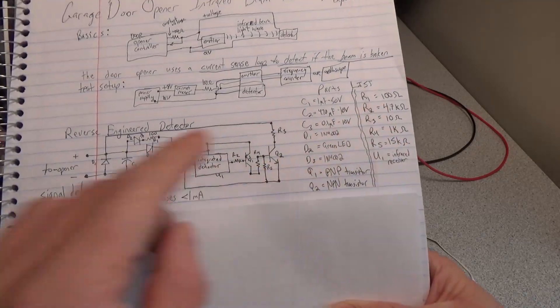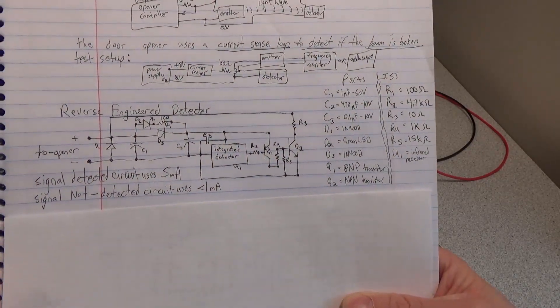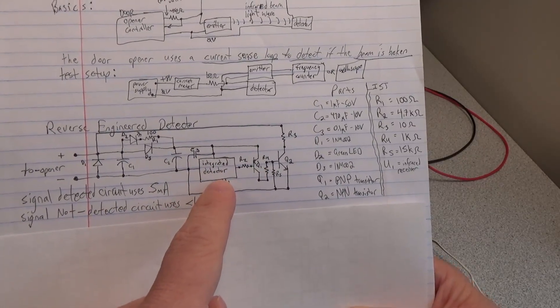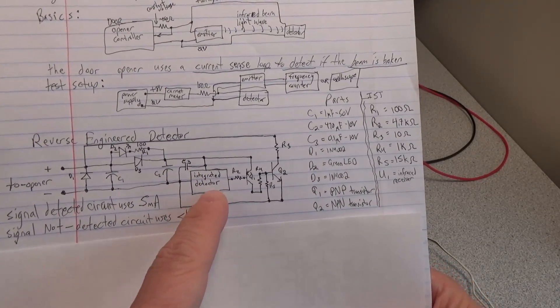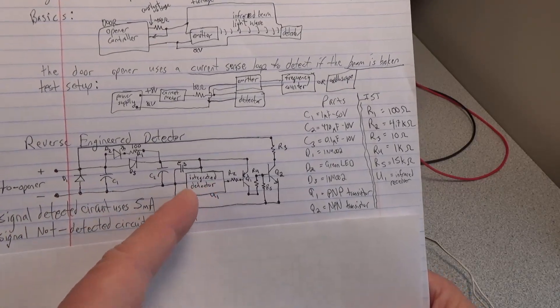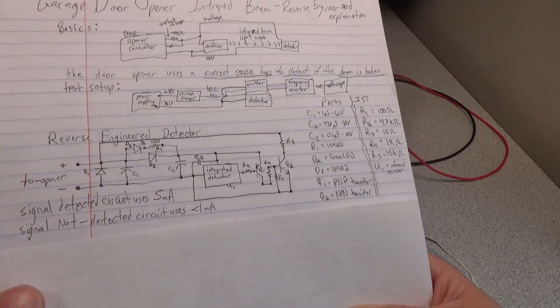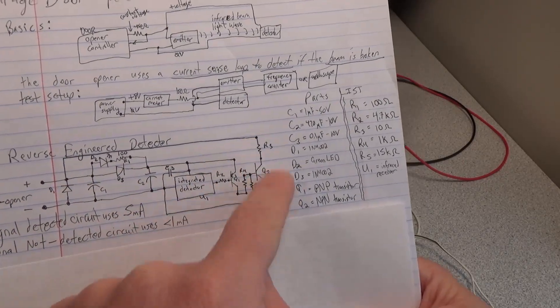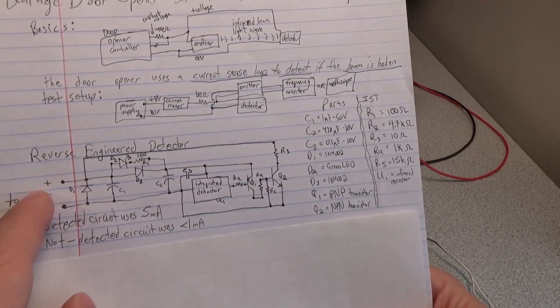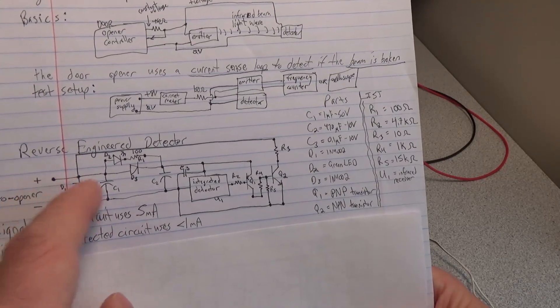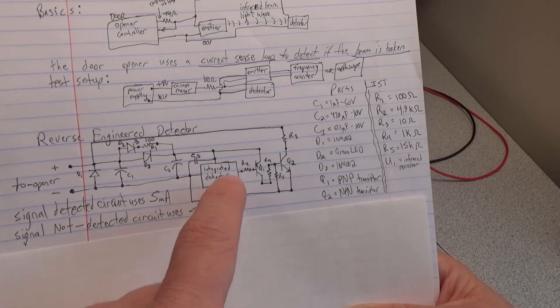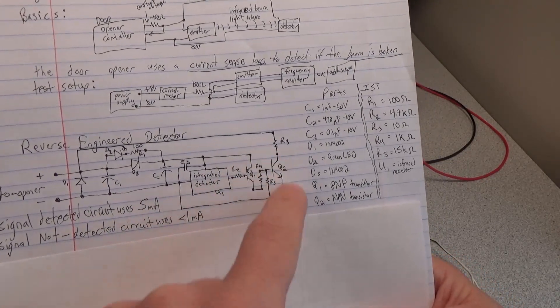I have the parts list here, so if you wanted to rebuild this, you could. I don't know what this integrated detector is, but I'm assuming it's any generic integrated detector. This circuit is doing some basics - this transistor effectively shorts out this side of the rail, which lights up this LED. If this doesn't get a signal, this never turns on.